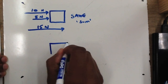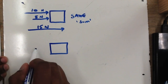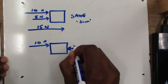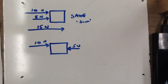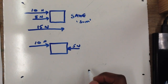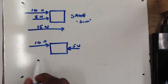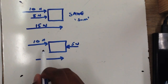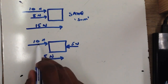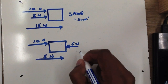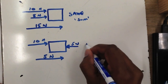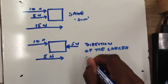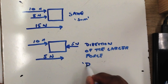Now if forces act in opposite directions — say a force of 10 newtons to the right and a force of 5 newtons to the left — the net force is first of all in the direction of the larger force. In this case the larger force is 10 newtons to the right, so our net force is to the right. It is also the difference between the two: 10 minus 5 equals 5 newtons. So the net force is in the direction of the larger force, and you subtract to find its magnitude.